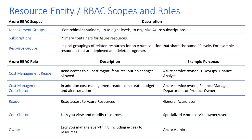RBAC is used by the Azure Cost Management service to grant or deny permissions to specific roles within an organization to perform cost management related activities. Azure Cost Management adds two new cost management specific RBAC roles: the Cost Management Reader role, which gives users read access to the cost management data at the specified scope and all levels below; and the Cost Management Contributor role, which gives users the rights to view cost data and also manage cost configuration — for example, they can change budgets and alert thresholds.